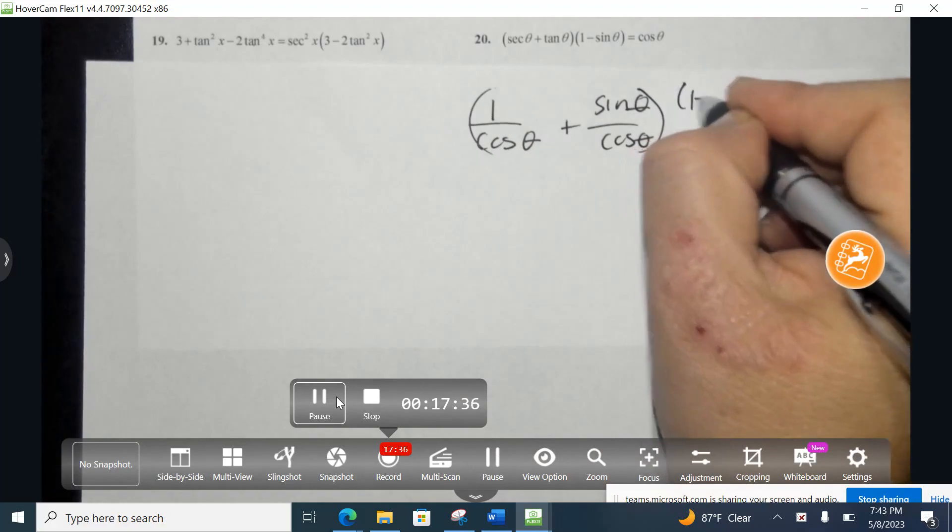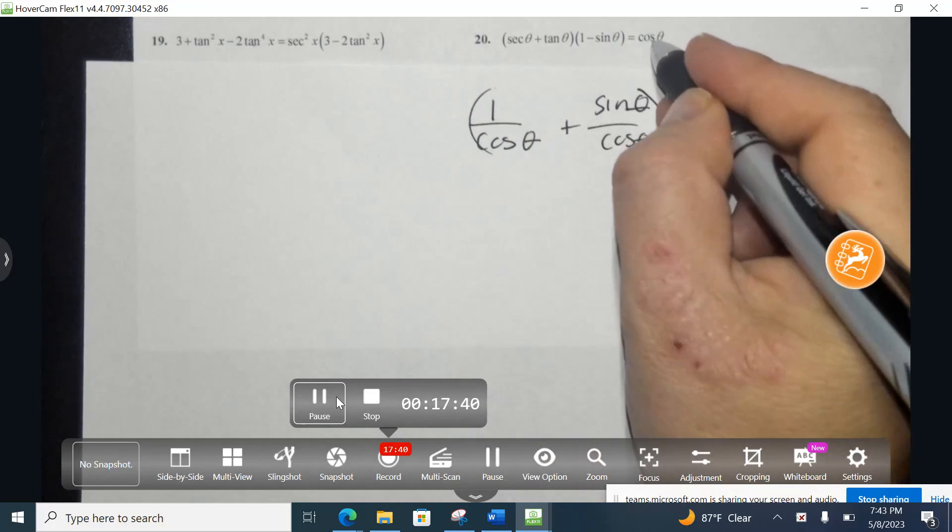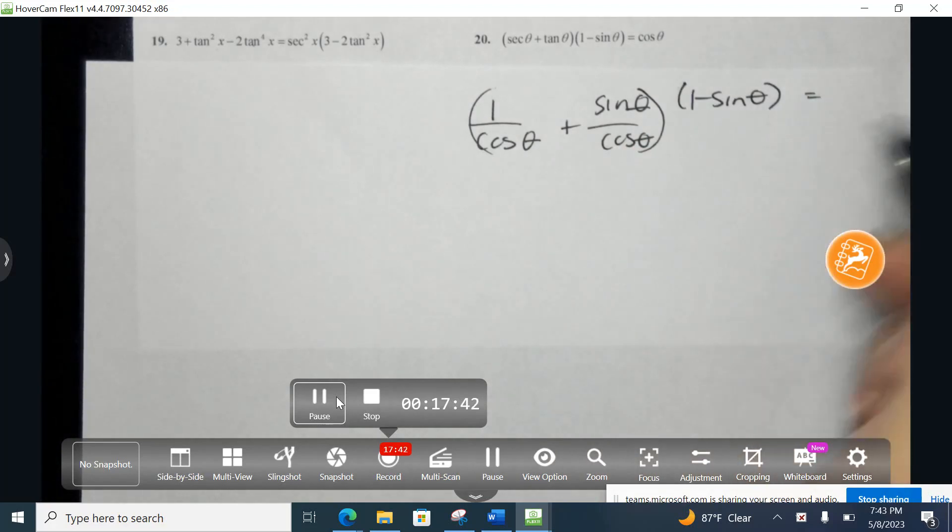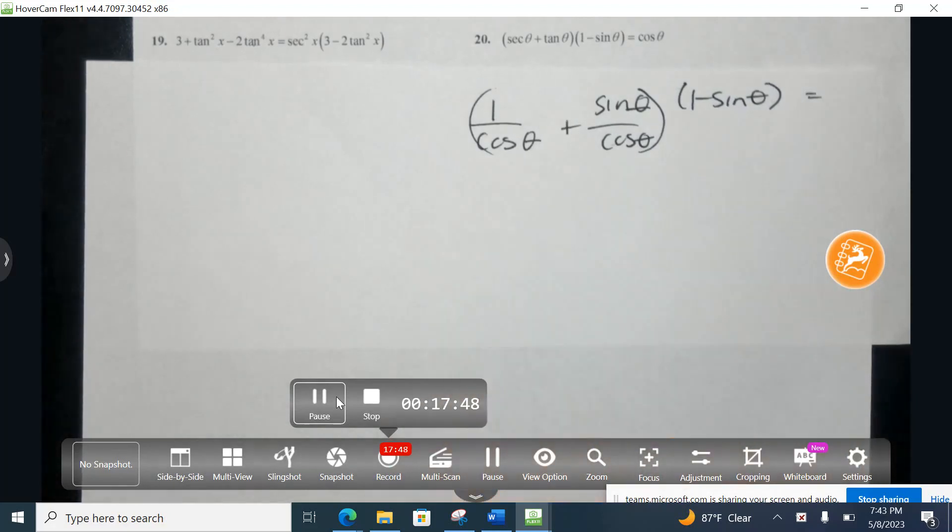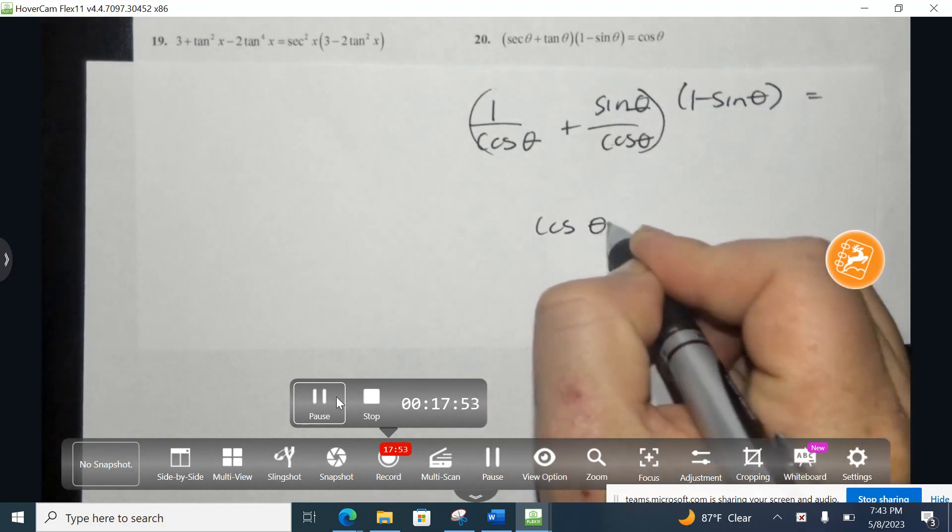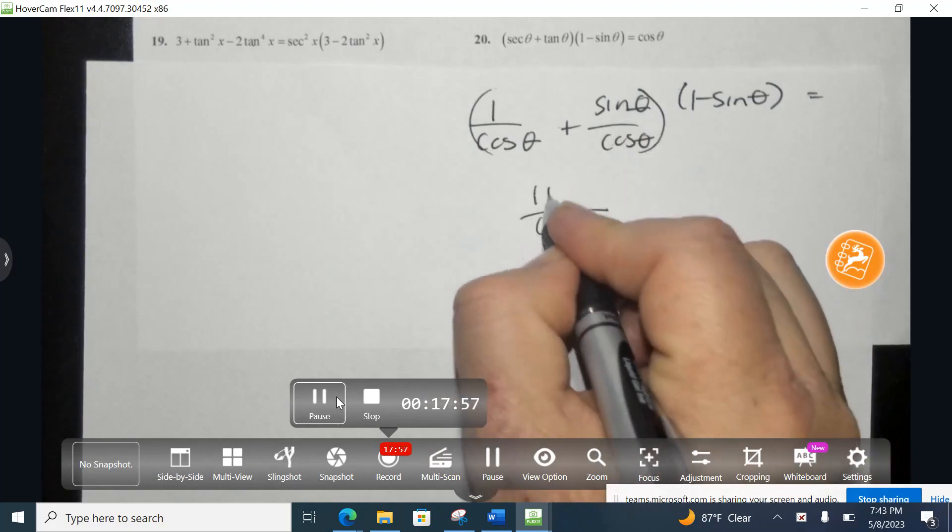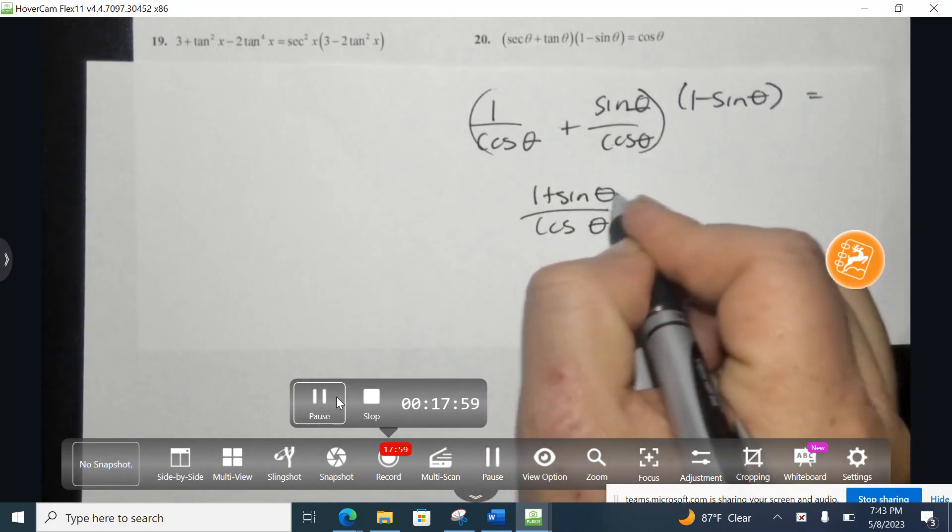And then we're going to multiply that eventually by 1 minus the sine. Now, that's all on the left-hand side. Eventually, I want that to equal cosine. Give me one second. So I have cosine on the bottom. So when you add fractions and you have common denominator, cosine stays on the bottom, and then I'm able just to add, in this case, adding the top. So I have 1 plus the sine top.